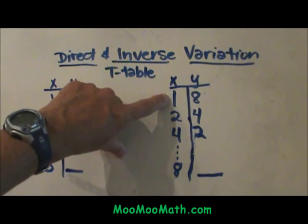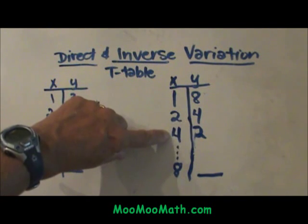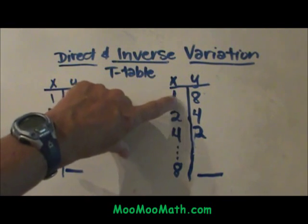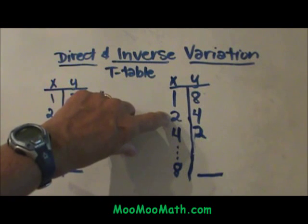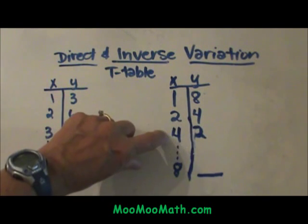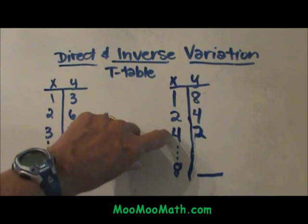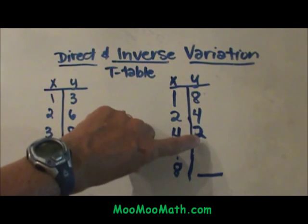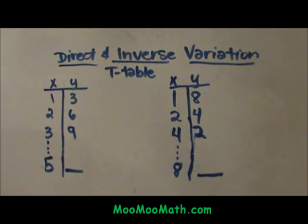Let's look at this one. We have 1, 2, and 4. When x is 1, y is 8. When x is 2, y is 4. When x is 4, y is 2. As x increases, y is decreasing. What pattern do we see?